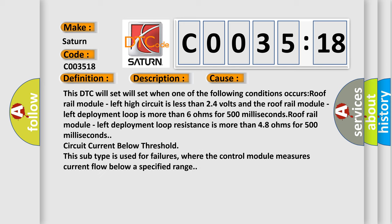This DTC will set when one of the following conditions occurs: Roof rail module left high circuit is less than 24 volts and the roof rail module left deployment loop is more than 6 ohms for 500 milliseconds. Roof rail module left deployment loop resistance is more than 4.8 ohms for 500 milliseconds.